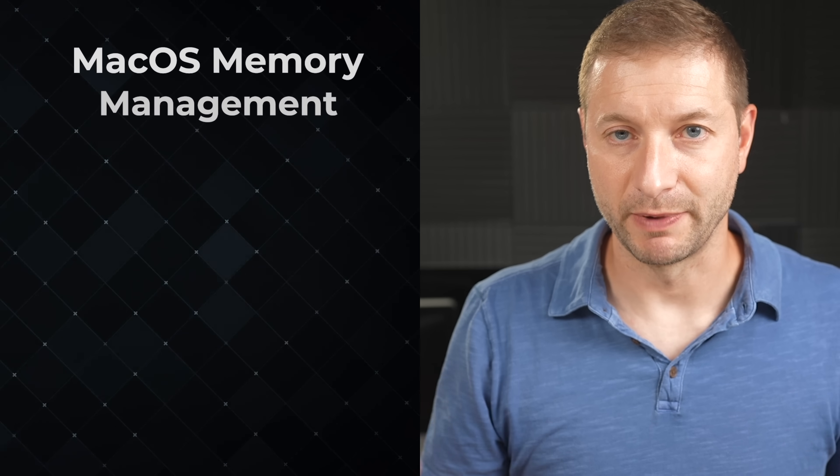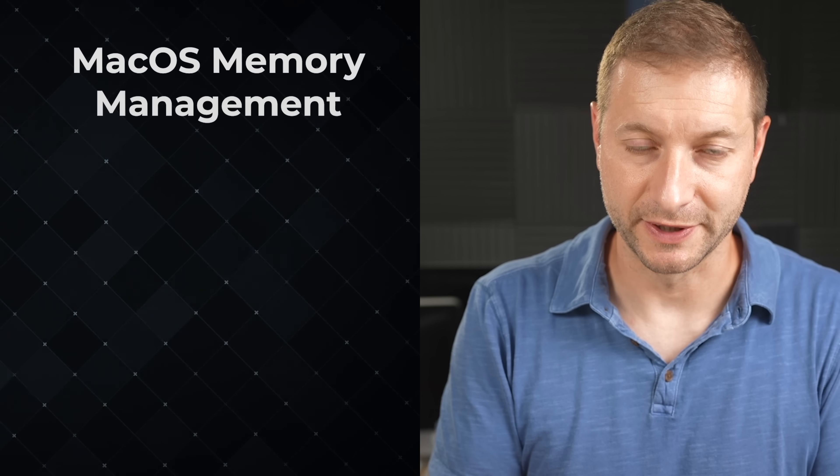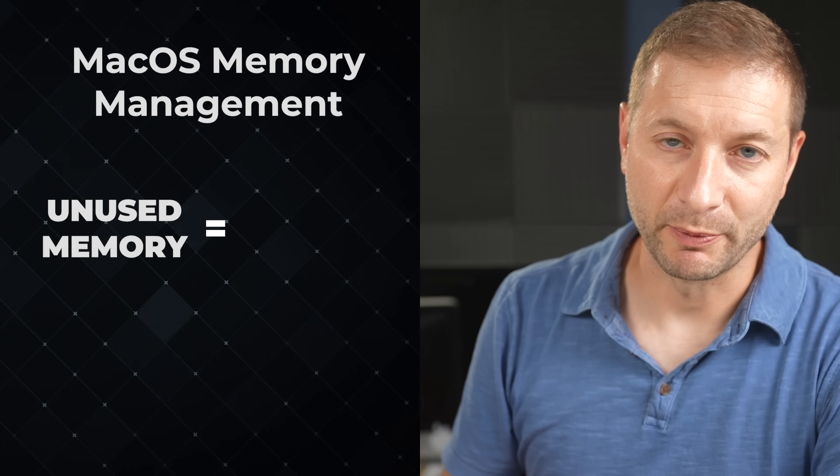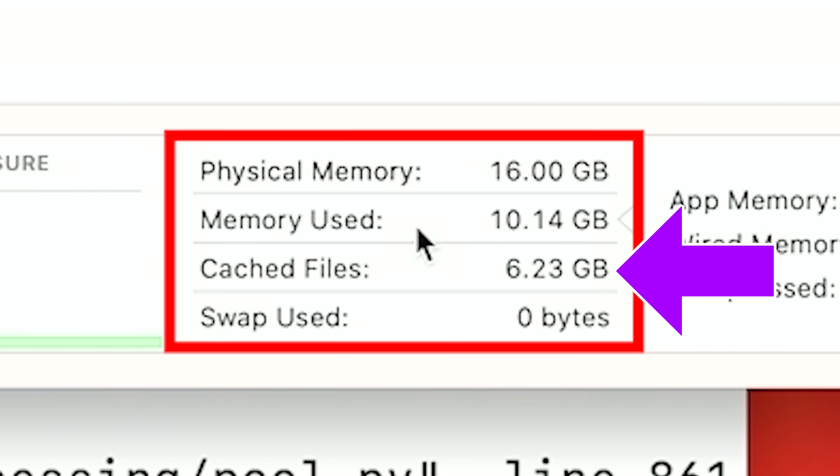A fun fact I discovered is that macOS loves utilizing RAM to the fullest. The more RAM available, the more macOS tends to use, pre-loading stuff in the background. Since 2013, Apple has had this memory management scheme going on with macOS. The theory behind it is that unused memory is wasted memory, so you should have as much stuff as possible in RAM. What's making up most of this is cache — a lot of stuff is being cached in the background by the operating system because it thinks you're going to use it soon.